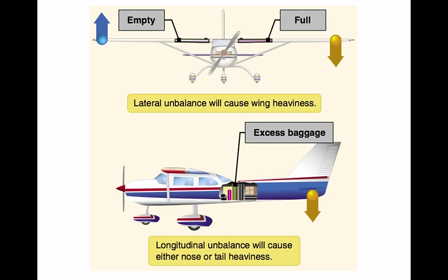Arm, or moment arm: the horizontal distance in inches from the reference datum line to the CG of an item. The algebraic sign is plus if measured aft of the datum and minus if measured forward of the datum. Basic empty weight: the standard empty weight plus the weight of optional and special equipment that has been installed. Center of gravity (CG): the point about which an aircraft would balance if it were possible to suspend it at that point. It is the mass center of the aircraft—the theoretical point at which the entire weight of the aircraft is assumed to be concentrated—and may be expressed in inches from the reference datum.